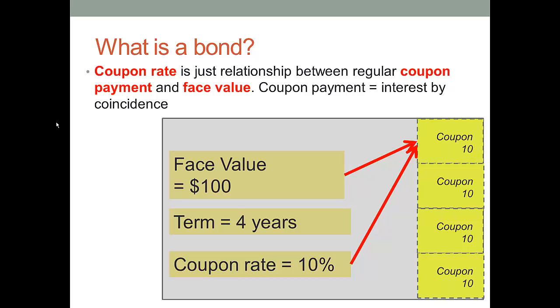Now, bonds only have three important bits of information. Firstly, the face value. This is the amount that the issuer of the bond promises to repay at the end of the bond's term. So if I'm borrowing money and you're lending to me, I promise to give you, in this case, $100 at the end of the bond term.